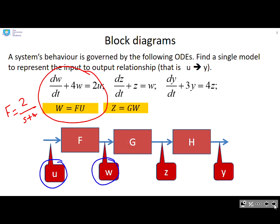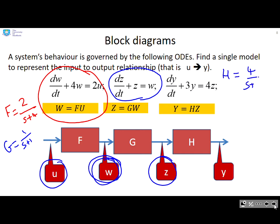Next, I've got this middle system. So I can write down a transfer function g equals 1 over s plus 1 to represent the relationship between w and z. And then finally, I've got y equals hz, and you can very quickly see that h is going to be 4 over s plus 3, and that gives you the relationship between z and y.